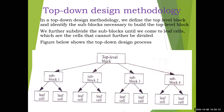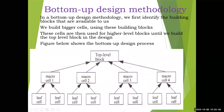In the bottom-up design methodology, which is the opposite, we first identify the building blocks available to us — these are the leaf cells. We then build bigger cells using these building blocks, forming macro cells. These macro cells are then used to build higher-level blocks until we arrive at the top-level block. The arrow direction in the figure is reversed compared to top-down — the concept is also reverse. We'll see this with an example in further slides.